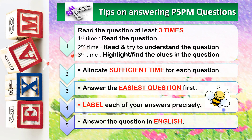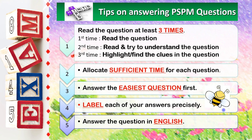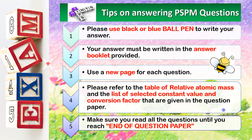Here are the tips on answering PSPM questions. Read the question at least three times — read, understand, and highlight the clues in the question. Allocate sufficient time for each question. Answer the easiest question first. Label each of your answers precisely. It is recommended to answer the questions in English. Please use a black or blue ballpen to write your answers.